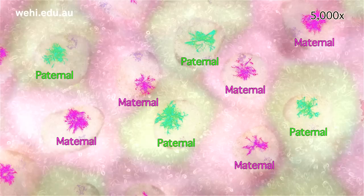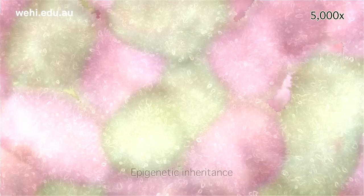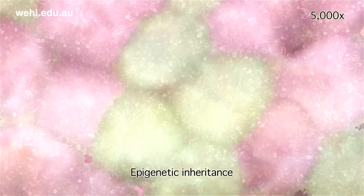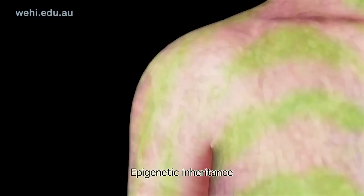From this point on, each cell will remember which X chromosome it has activated and pass this information on to its progeny as the embryo develops. This is an example of epigenetic inheritance, and the same pattern is maintained into adulthood.